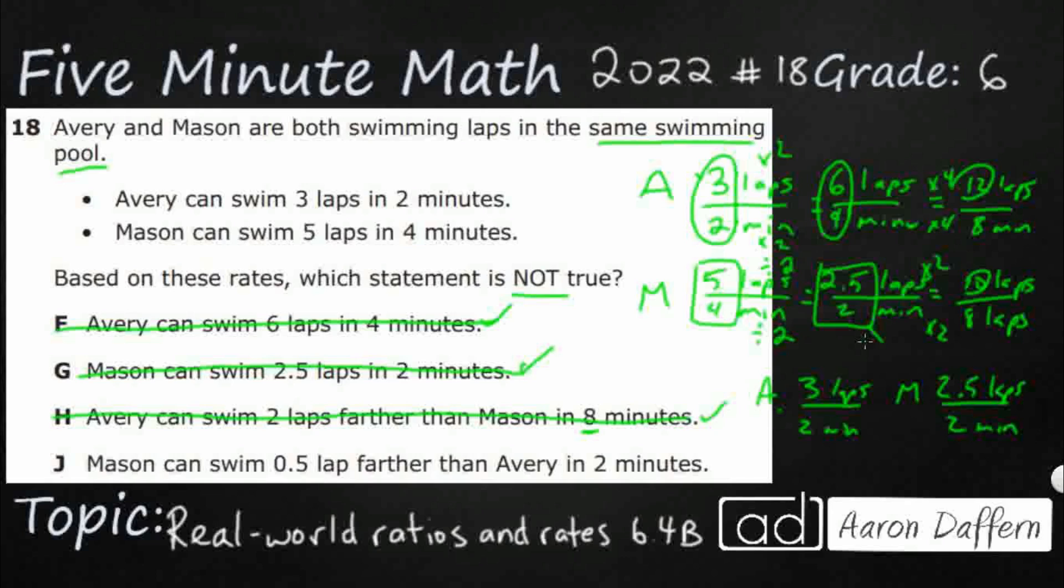And this is Mason can swim 0.5 lap farther. No. Actually, Avery can swim farther. Avery's got the 3 laps, Mason's got 2.5 laps. So Avery's the one that's actually going 0.5 laps farther. So that's the switch. If we were to switch these two names around, if we were to say Avery can swim 0.5 laps farther than Mason in 2 minutes you'd be correct. But this is incorrect, which means our answer is J.